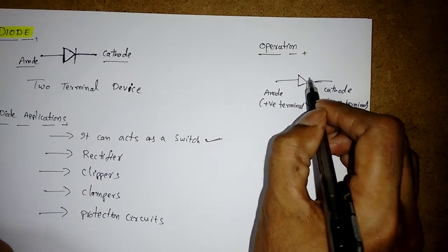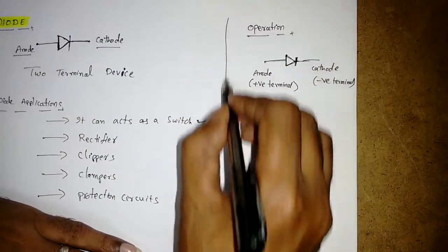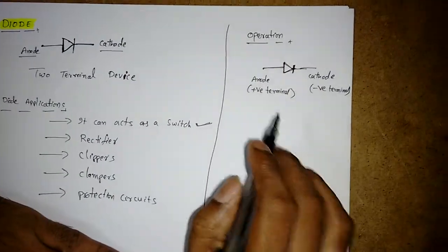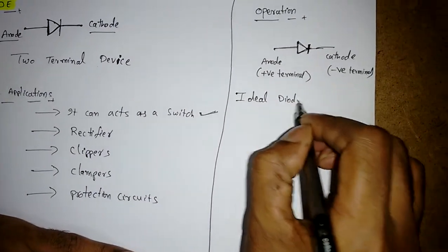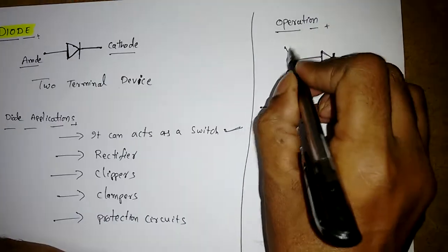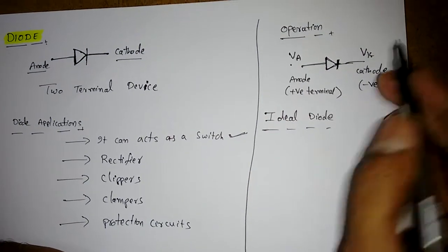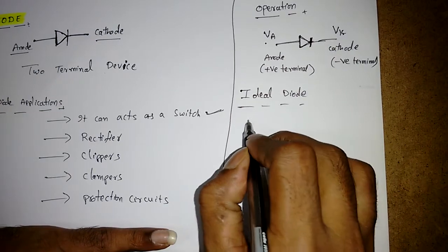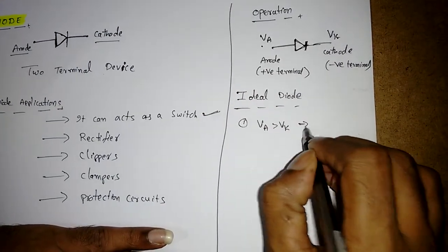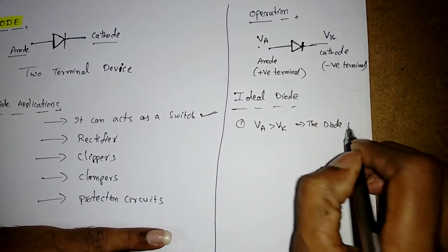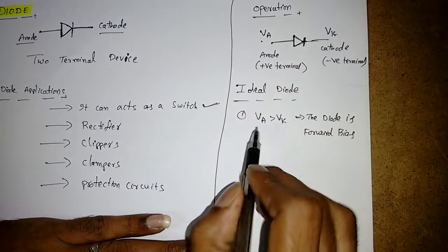What happens inside with P-type and N-type semiconductors we will see later. For studying these applications, that is not required right now — we only need to know the operation. For an ideal diode, I am considering two voltage levels: the anode voltage VA and the cathode voltage VK. The first condition is whenever VA is greater than VK, the diode is forward biased.